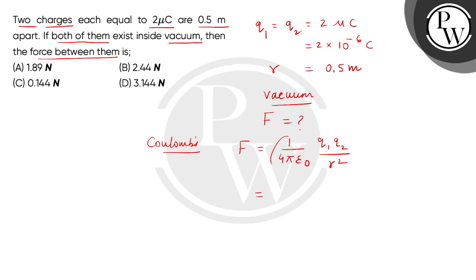So kids, the value will come: 1 by 4 pi epsilon naught is 9 multiplied by 10 to the power 9. Then q1, q2 are both value of 2 micro coulomb. So here we get 10 to the power minus 12 divided by 0.5 square. So kids,